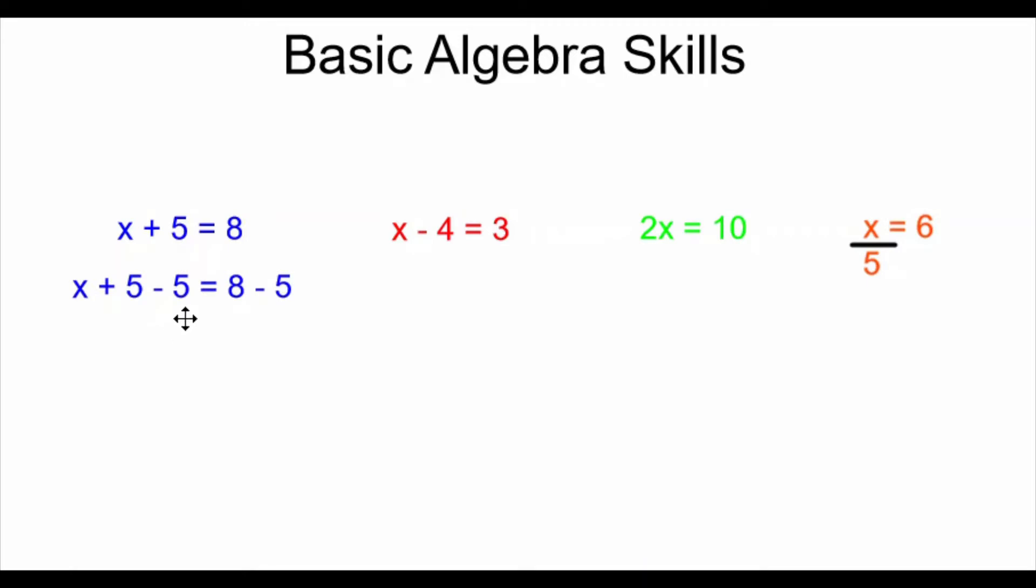But the rule of algebra is, if I'm going to subtract a 5 on the left side of the equals, I also have to subtract a 5 on the right side. Whatever you do on one side has to also be done on the other. So I have x plus 5 minus 5 equals 8 minus 5.